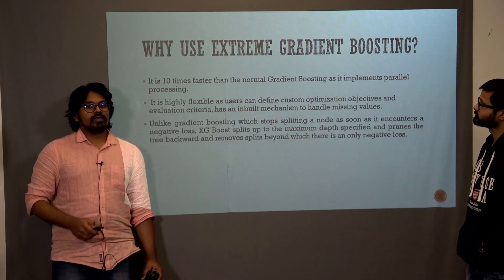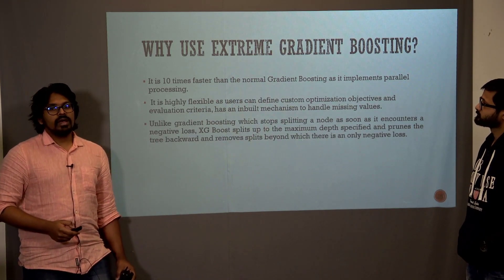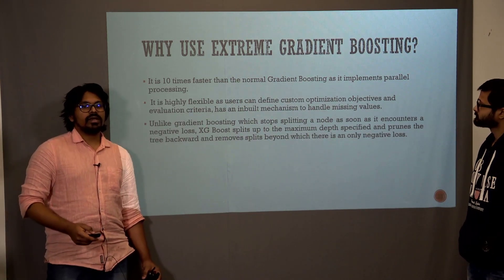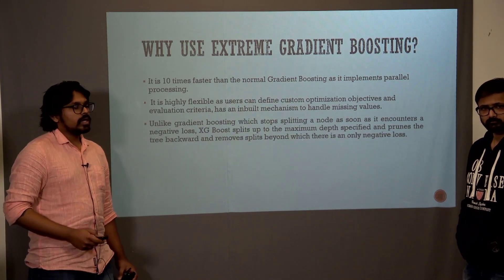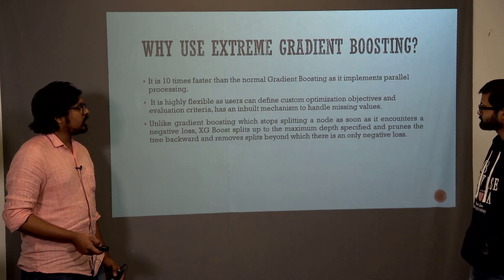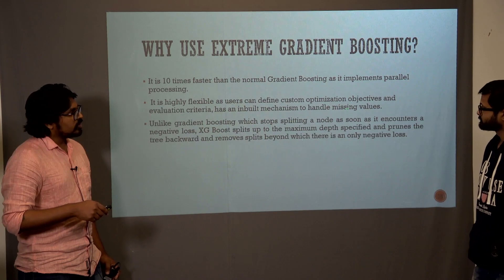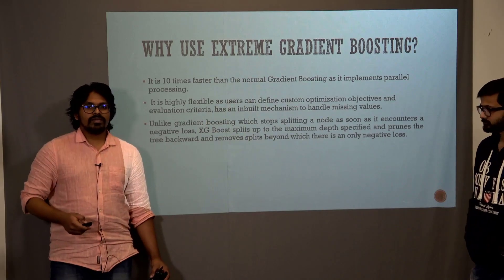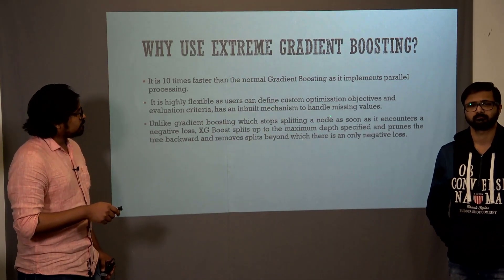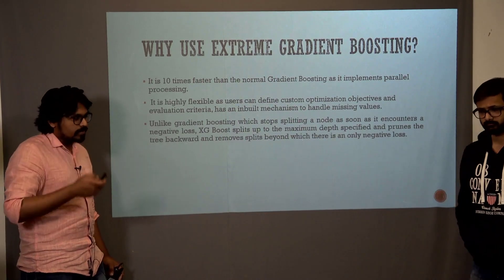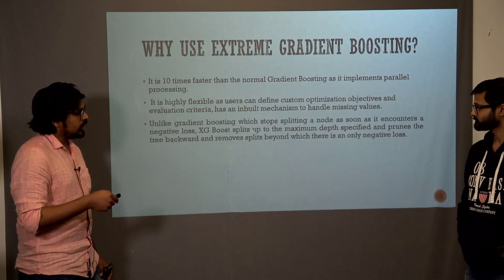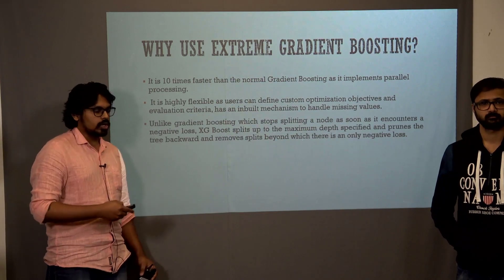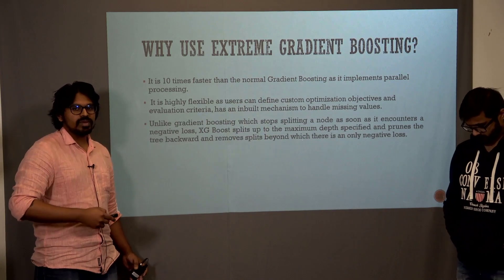XGBoost was chosen because, compared to previous boosting methods like gradient boosting, it is ten times faster on large datasets due to parallel processing. It also handles missing values, unlike gradient boosting. In gradient boosting, if there is a negative loss at a node, the tree stops there. In XGBoost, it splits to maximum depth and then prunes the tree back to reduce loss, which decreases overall error and gives us better model performance.